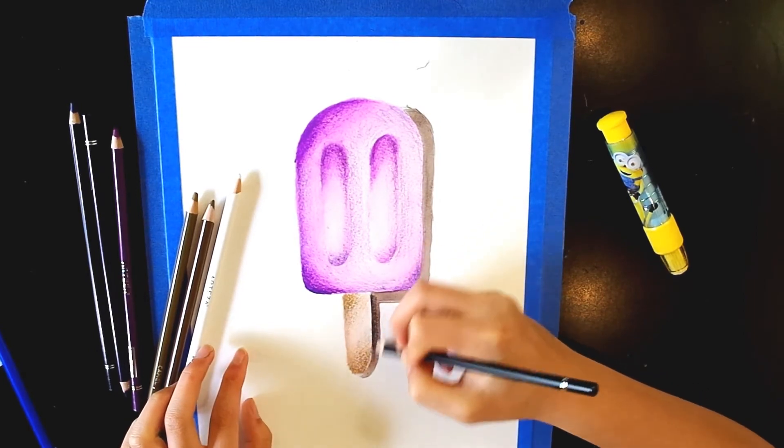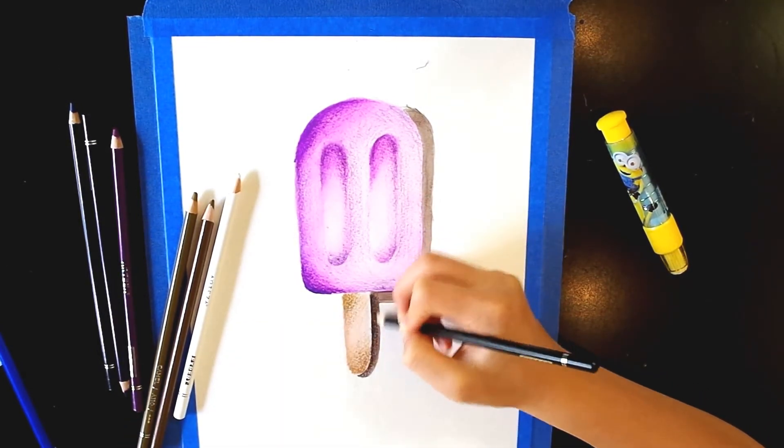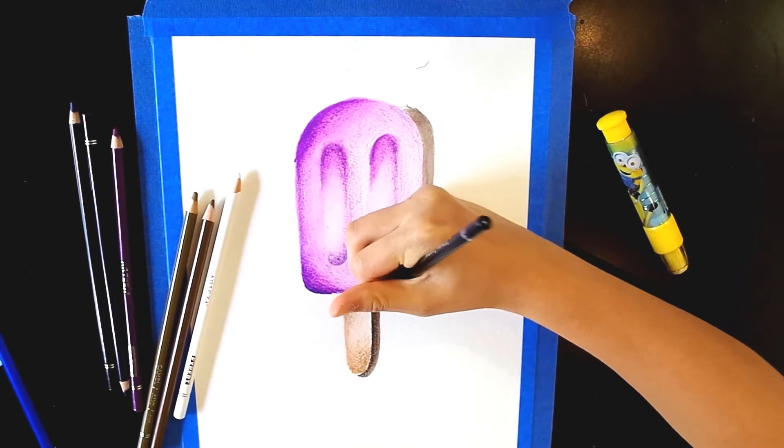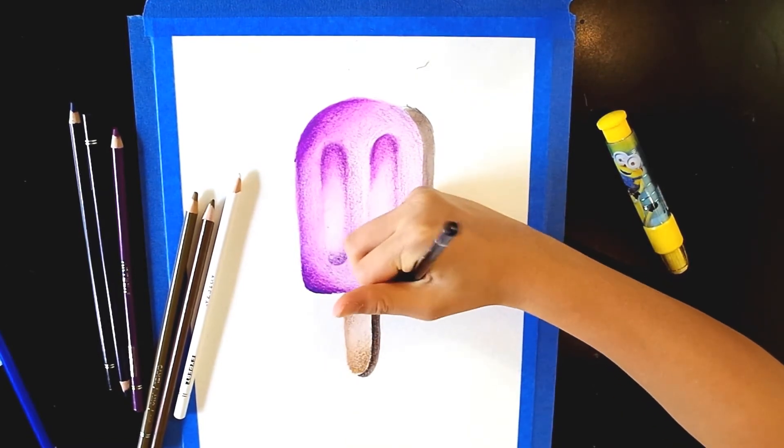Use a dark color such as black to color the shadow. This brings more depth to the drawing and makes it look more realistic. It also makes the drawing pop.